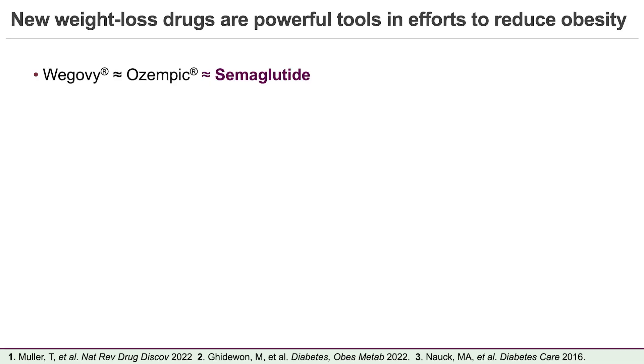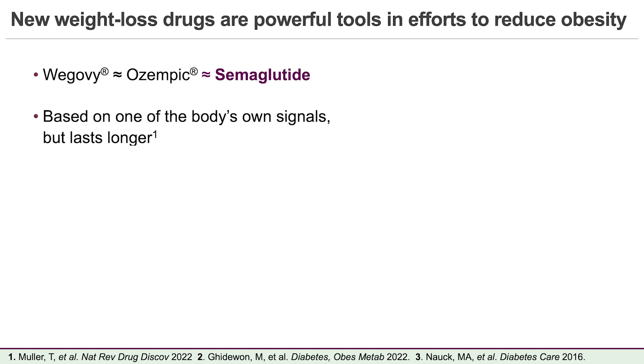So who's heard of Wegovy or Ozempic? They've been all over the news, and these are actually the same drug, just given different doses to treat obesity or type 2 diabetes. The generic name is semaglutide, and the drug is based on a hormone that occurs naturally in the body, but the drug design makes it last a lot longer in circulation, so people can lose about 15% of their body weight.